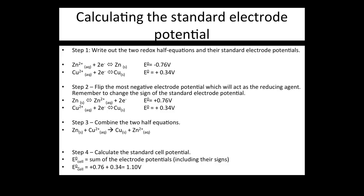Step 2: the more negative standard electrode potential needs to be flipped as it is acting as the reducing agent and donating the electrons. So we get Zn(s) → Zn²⁺ + 2e⁻. We also need to flip the sign of the standard electrode potential, which becomes positive 0.76 volts.